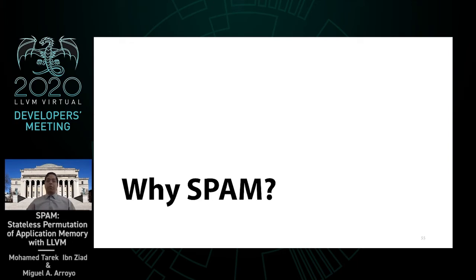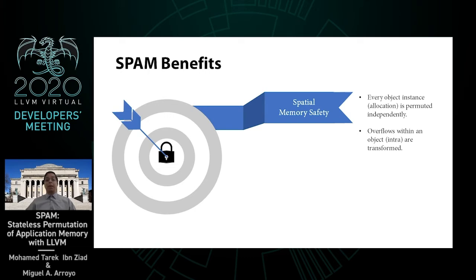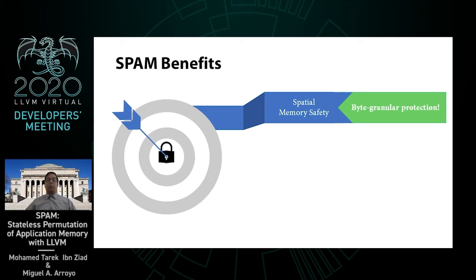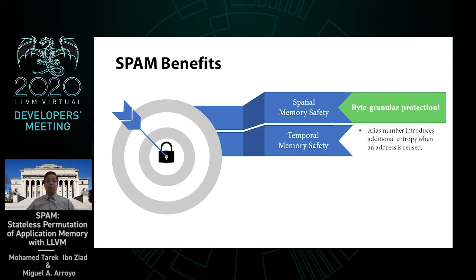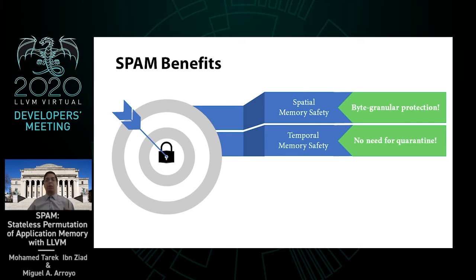Now let's discuss the benefits that SPAM offers. SPAM provides spatial memory safety as every object instance is permuted independently. Moreover, the multi-dimensional object transformation provides protection against intra-object overflows, enabling byte-granular spatial memory safety. Temporal safety is also achieved by the alias number construct, which introduces additional entropy when a memory region or address is reused. As a result, we do not have to quarantine recently freed memory — memory quarantining can significantly increase memory footprint, especially for programs that allocate many objects with short life cycles.